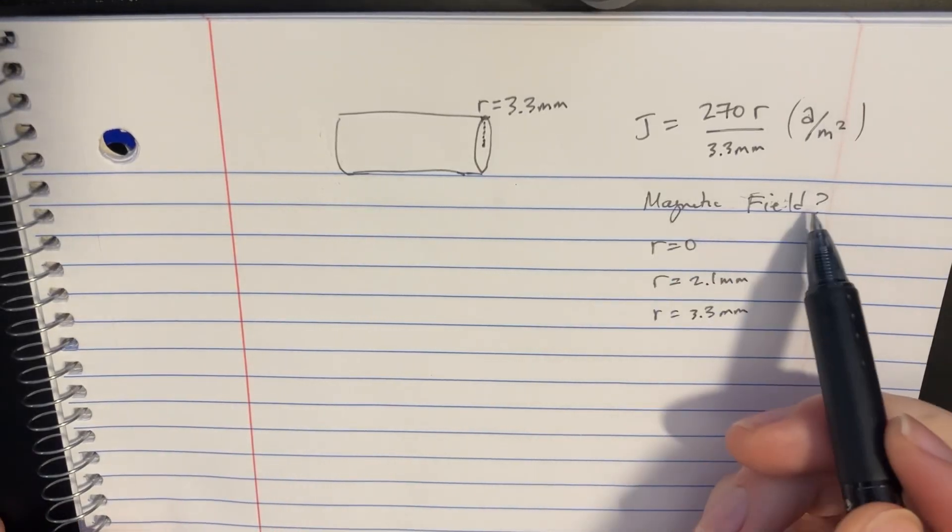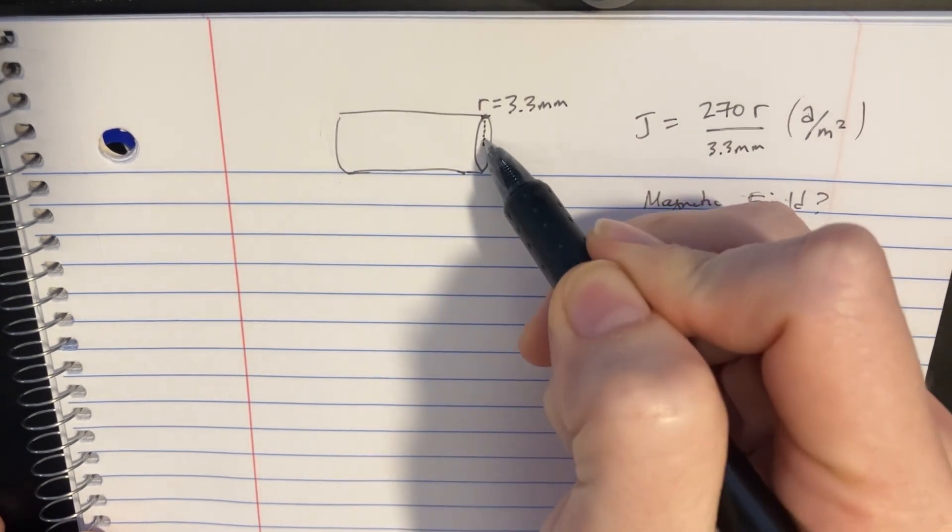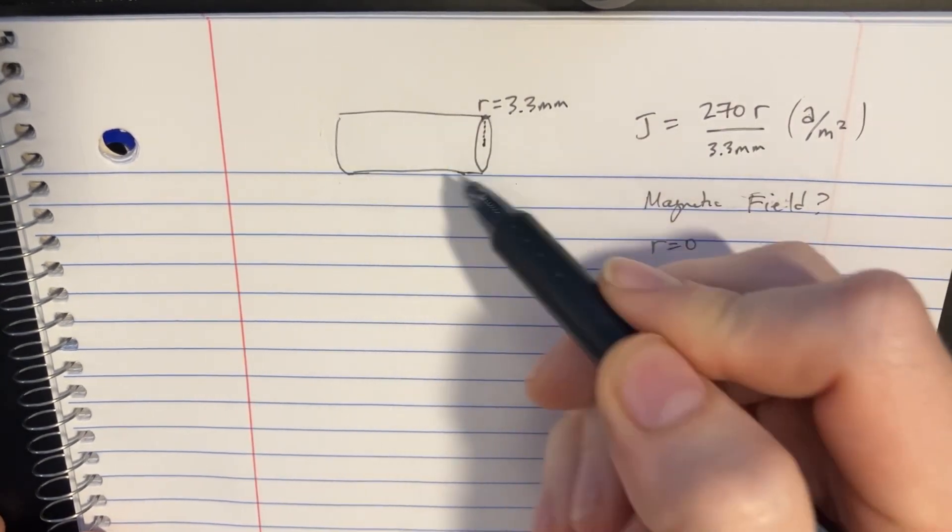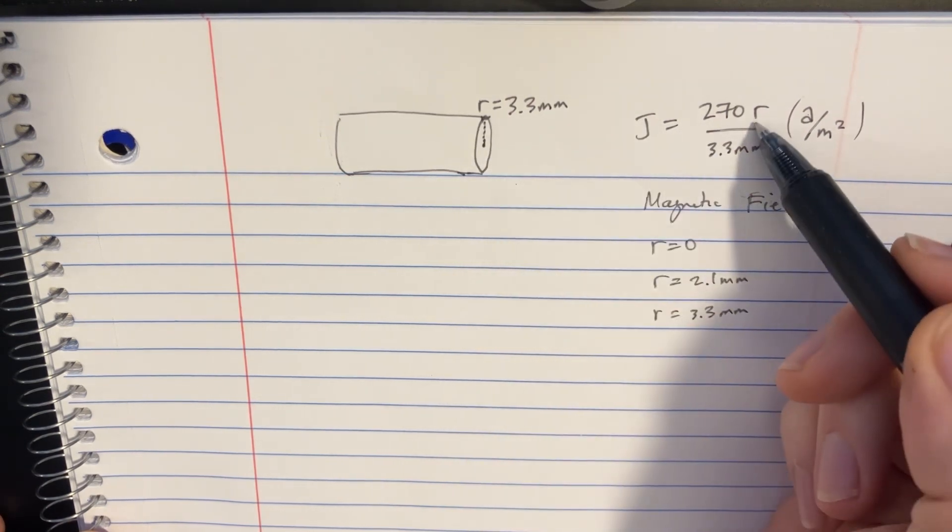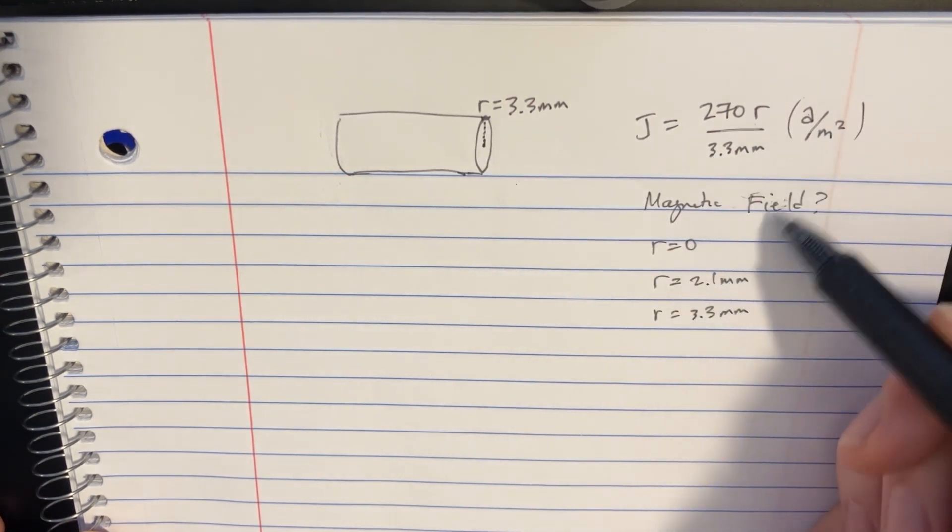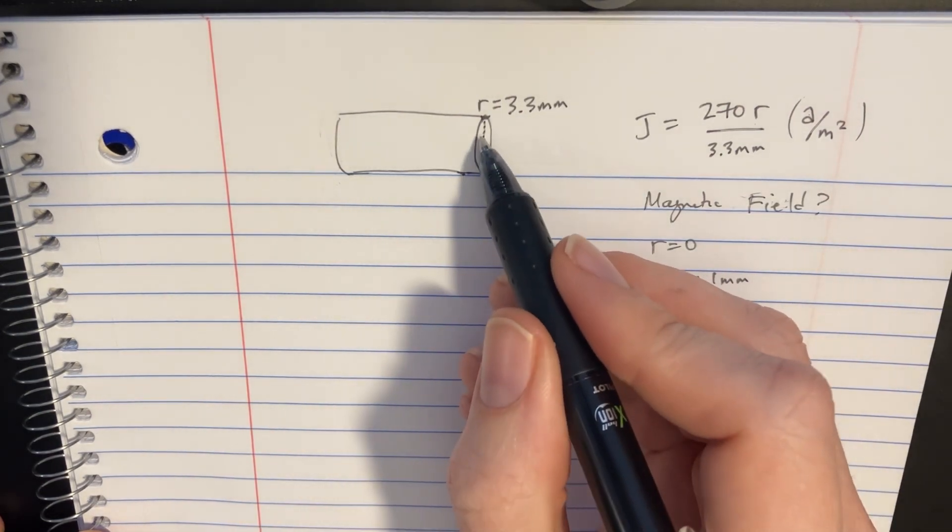We're trying to find the magnetic field at these different radiuses from the center of this wire. It's carrying a non-uniform current, so it's going to have a current density that's going to be varying in terms of r here, based on this formula.